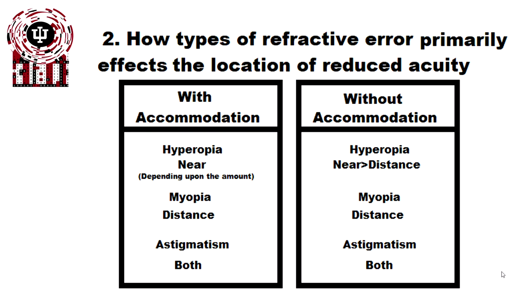Without accommodation, though, for hyperopes, near tends to be worse than distance, but distance is also reduced. Myopia is just affected by distance, and astigmatism is affected by both.